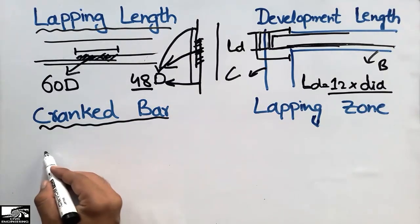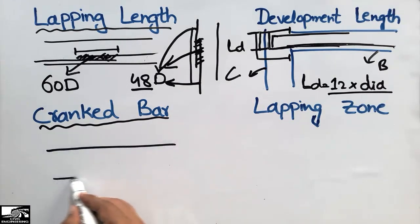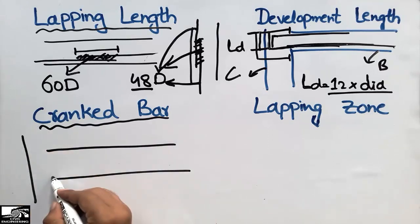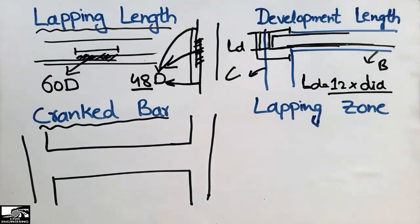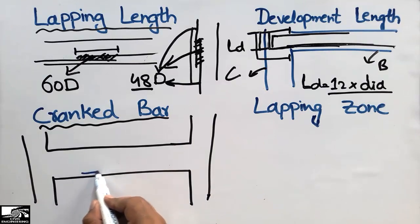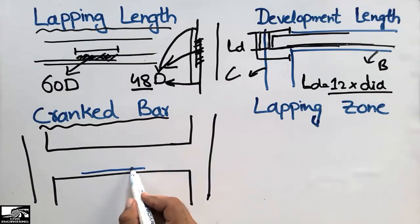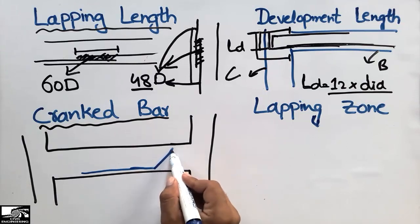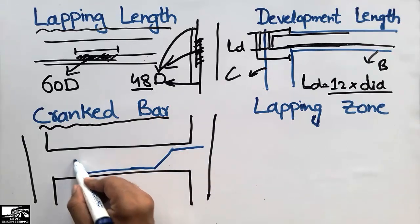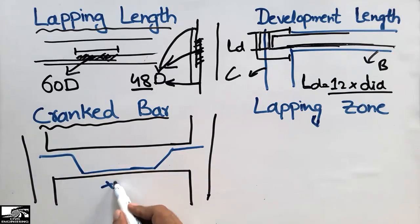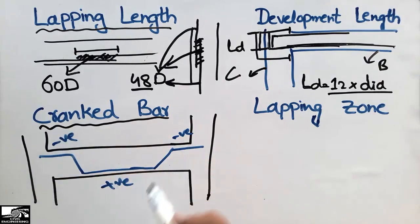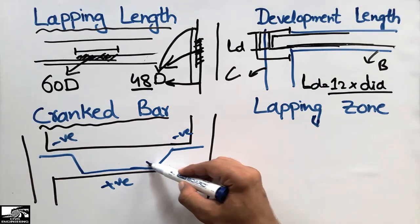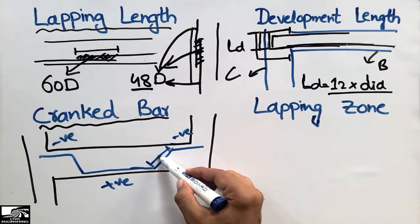The third topic is the crank bar. For example, consider a beam supported by two columns. Beams take positive moments at the midspan and negative moments at the supports. We provide the crank bar to resist both the positive moments at midspan and the negative moments at the supports. This type of bar is called the crank bar.